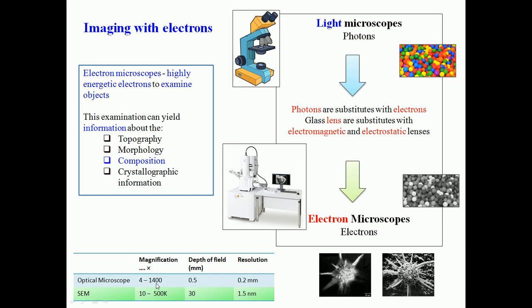The optical microscope has magnification of the order of 1500, depth of field up to 0.5 millimeter, and resolution of 0.2 millimeter. These are disadvantages of optical microscopy, which are overcome by the electron microscope, where photons are replaced by electrons. In the optical microscope, glass lenses are used, while in the electron microscope, electromagnetic and electrostatic lenses are used. With the electron microscope, we do not get a colored image.